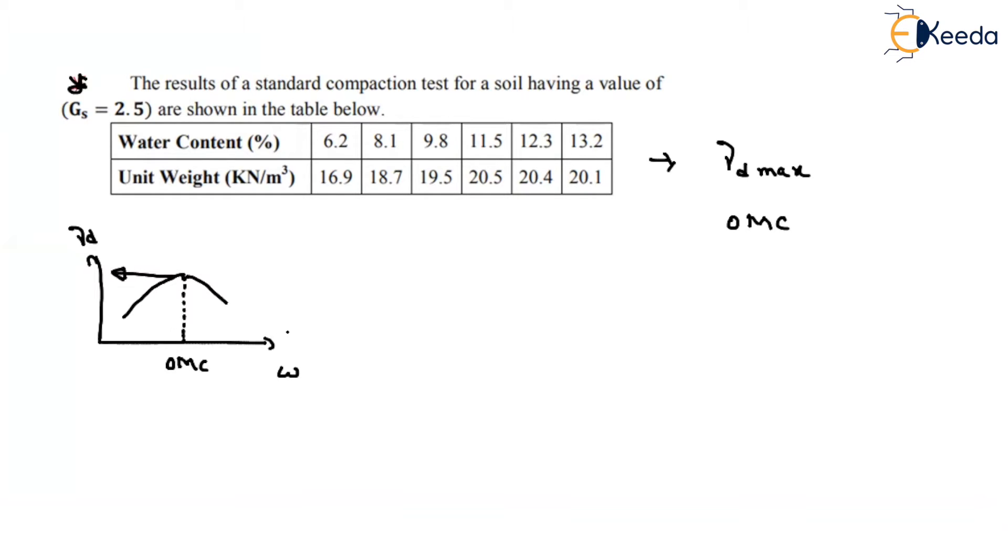Now if you see in this question, corresponding to different water contents, the unit weights of soil are also given. So if you want to find out the optimum moisture content, first you have to find out of these six possible cases what is the maximum dry density. So here water content is given, unit weight is given. Based on these two, is there any possibility that I can find out gamma_d? Gamma_d is nothing but gamma divided by 1 plus w.